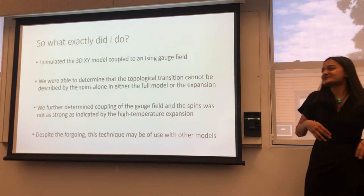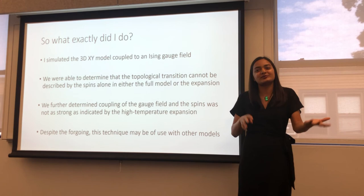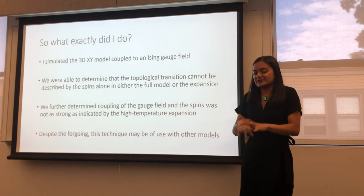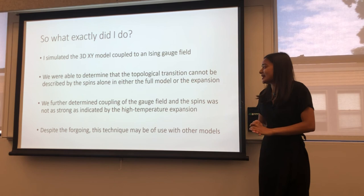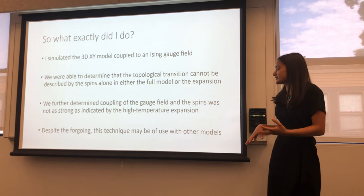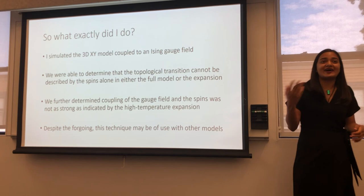So unfortunately, it didn't work. I spent my summers simulating this particular model, both the full model and the expansion. And basically, from our results, we were able to determine that the phase transition cannot just be viewed from the spins alone in either the full model or the expansion. And we realized that the reason for this was that the coupling between the sigmas and the spins was just not as long as we had originally thought, and it was indicated by the expansion. So this is something that we're still looking into, and it was a bit of an unexpected result, but it's still interesting nevertheless.